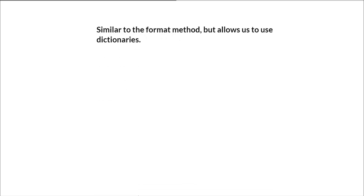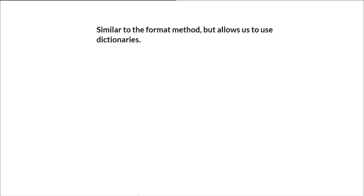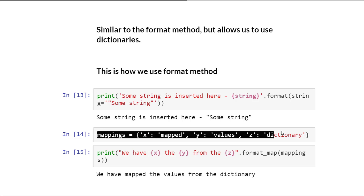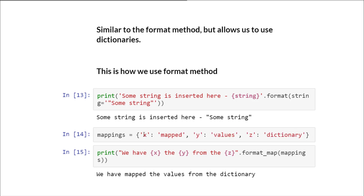Then the next is the format_map method. It is similar to the format method but allows us to use dictionaries. With the format method we apply a format identifier and pass our string. But with format_map, you define a dictionary called 'mapping' with key-value pairs, then call format_map passing that mapping as the argument. In the output, x, y, and z are mapped from the corresponding dictionary values.